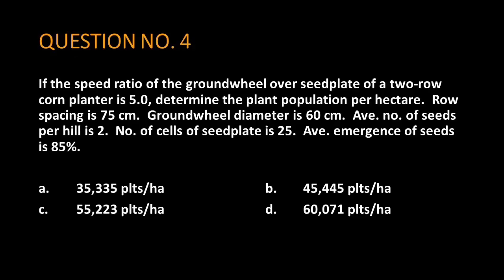Question number 4. If the speed ratio of the ground wheel over seed plate of a two-row corn planter is 5, determine the plant population per hectare. Row spacing is 75 cm. Ground wheel diameter is 60 cm. Average number of seeds per hill is 2. Number of cells of seed plate is 25. Average emergence of seeds is 85%.